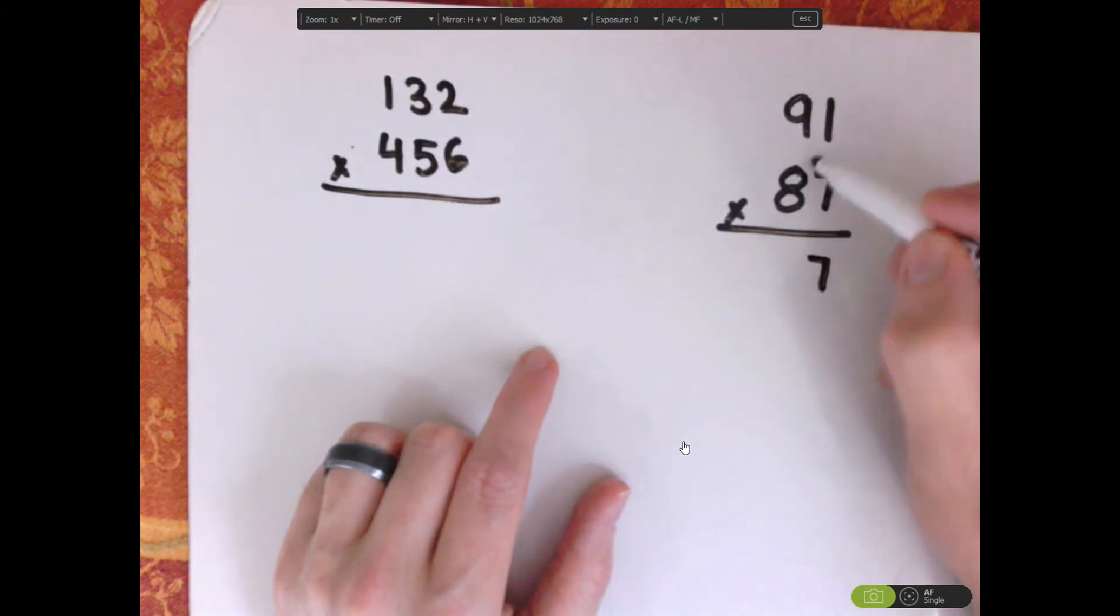Now, in the middle you're going to do a criss-cross. So, we'll do 8 times 1, which is 8, I'll write this on the side, 7 times 9 is 63. You add those together, 63 plus 8 is 71, so 1, carry the 7.